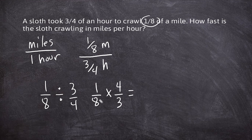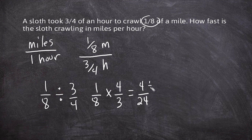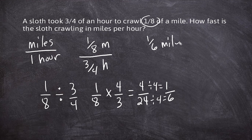We can multiply straight across to get four over twenty-four, then simplify. Both four and twenty-four are divisible by a greatest common factor of four. Four divided by four is one, and twenty-four divided by four is six. So the sloth was crawling one-sixth of a mile in one hour.